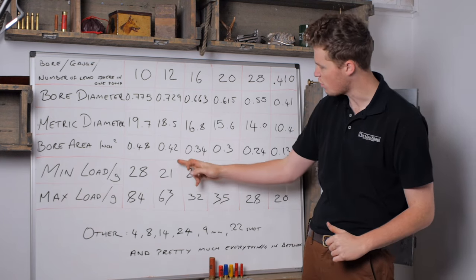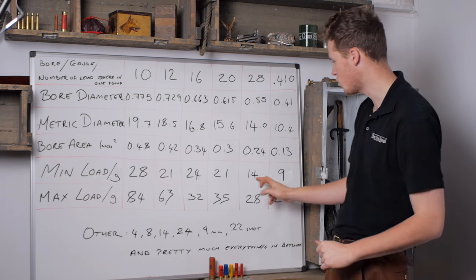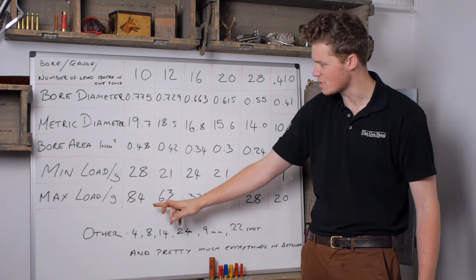So which one of these is best? Just going on the logical numbers here, one would probably say the 12 bore. You have an equal lightest load with the 28, and yet you're up at 63 grams, so you can almost compete with a 10.